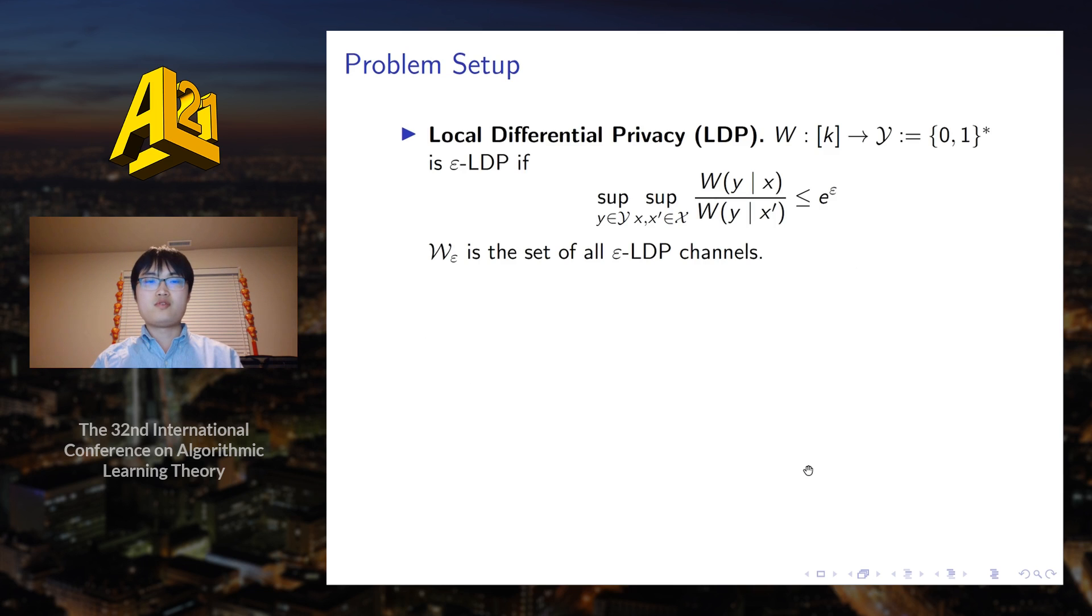One local information constraint we consider is the local differential privacy constraint, which basically says that for every pair of inputs X and X prime, the probability of outputting any message Y should be almost the same. Another constraint we consider is the communication constraints. Each user may only send L bit binary strings.